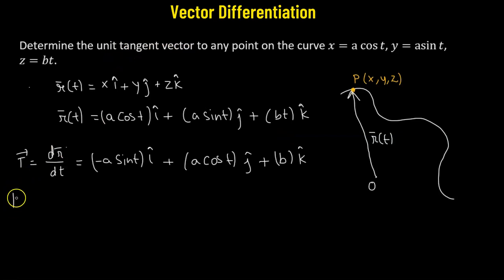To find the unit tangent vector, we have the tangent vector, so we also need to find its magnitude. Let's take the magnitude of the tangent vector. We take each of the components, square it, add them to each other, and then take the square root. We have a² sin²(t) + a² cos²(t) + b², which gives us √(a² + b²).